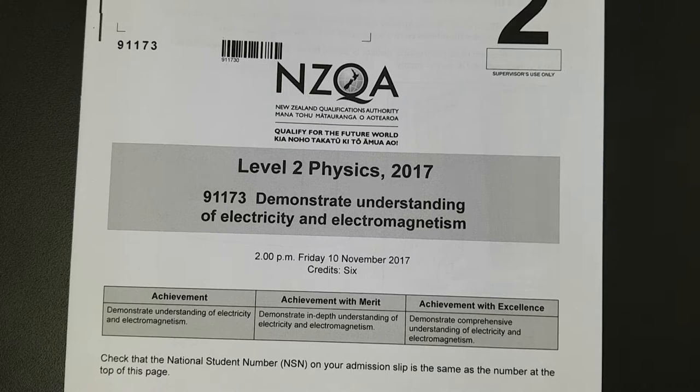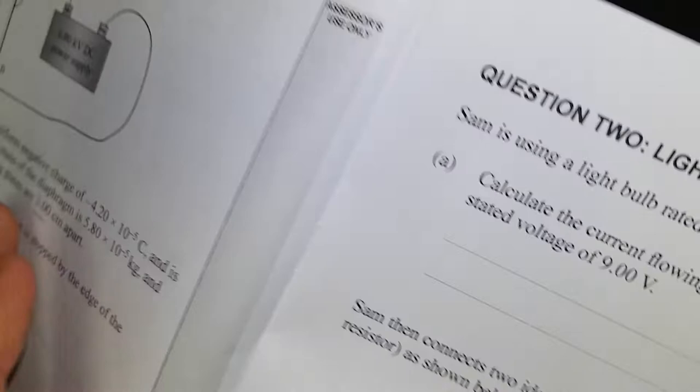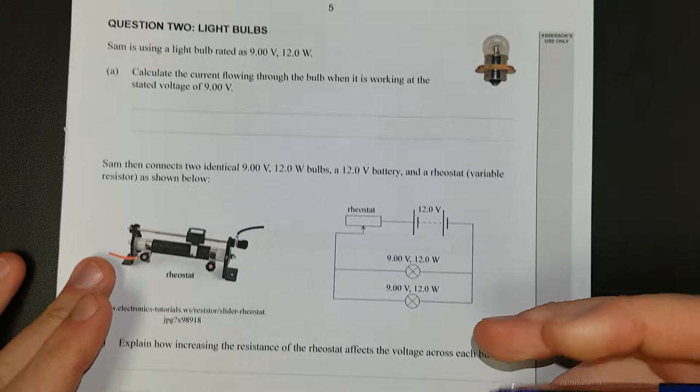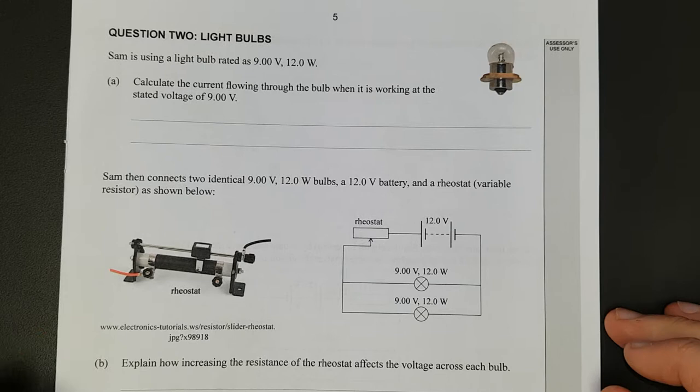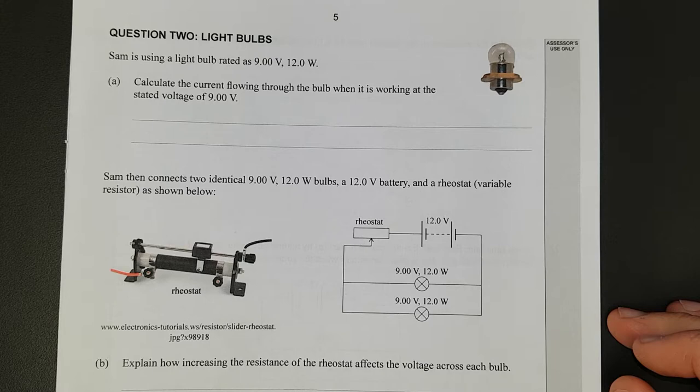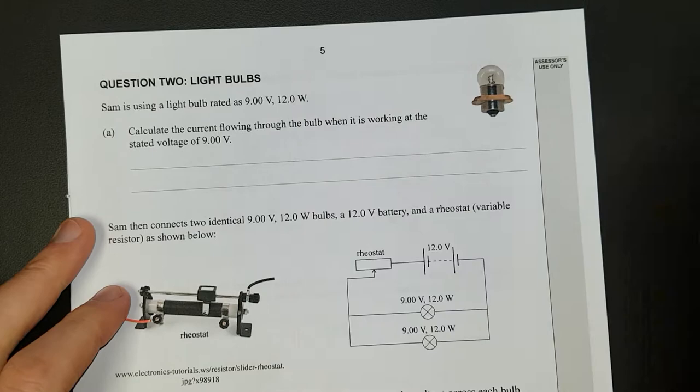For this video I'll be working through the level 2 2017 electricity magnetism exam. I'll be working through question 2. The question is a circuits question. Sam is using a light bulb rated as 9 volts 12 watts. Calculate the current flying through the bulb when it's working at its stated voltage of 9 volts, which basically means at 9 volts it's putting out 12 watts of energy or 12 joules per second.